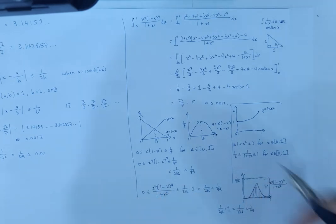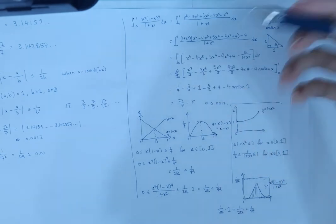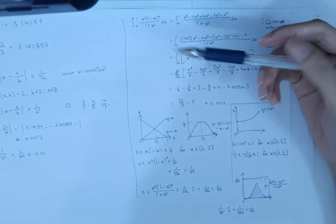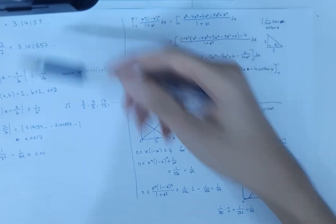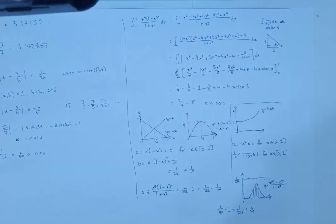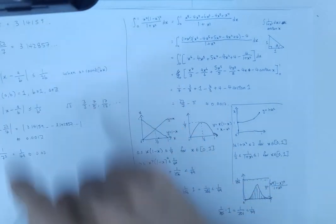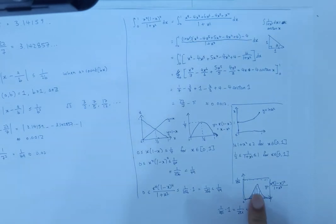And this is why 22 over 7, and this is how we can show that 22 over 7 is indeed an exceptionally good approximation to pi without knowing the value of pi beforehand. And in fact, this actually also shows that 22 over 7 is an overestimate to pi rather than an underestimate, since this thing is always positive.